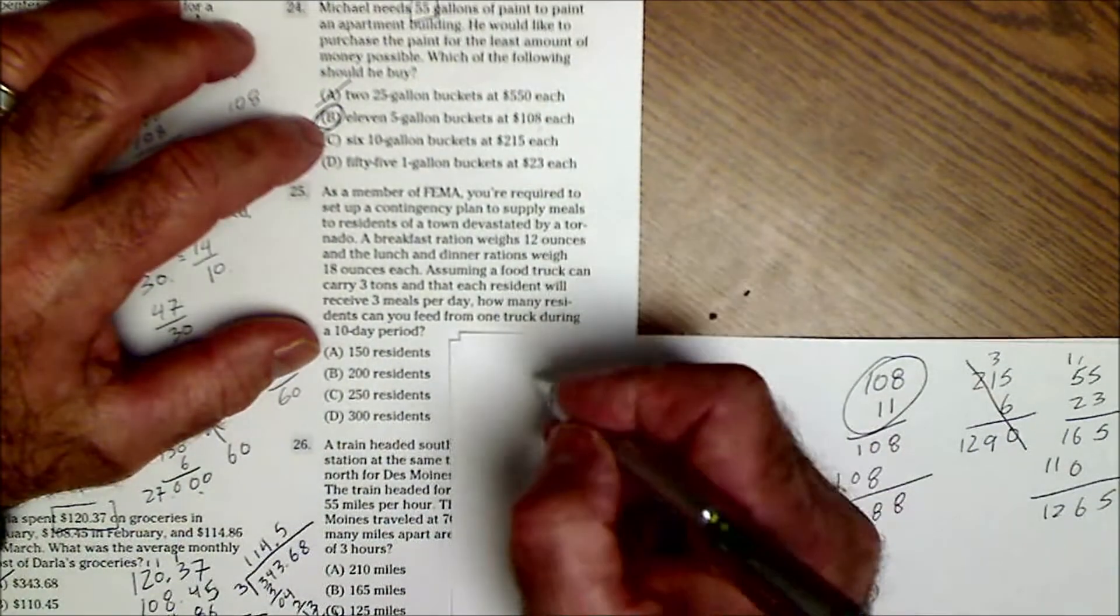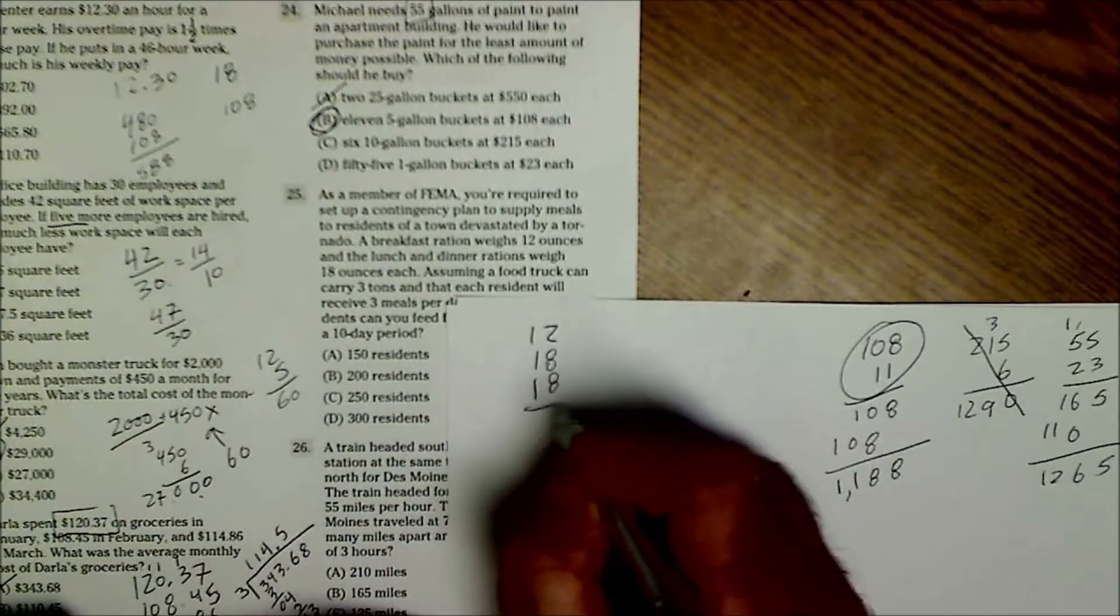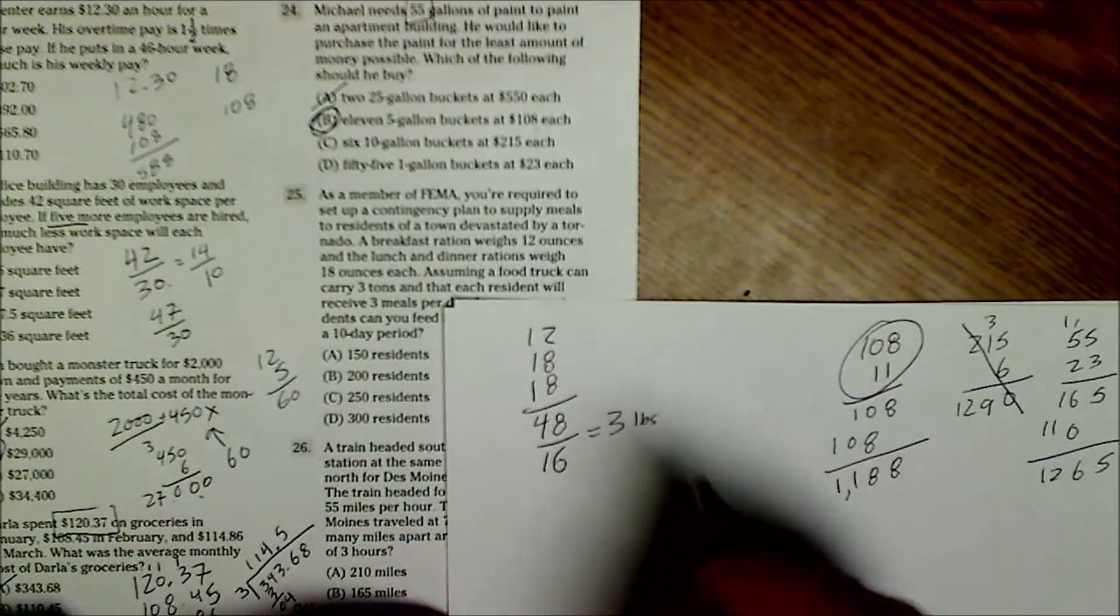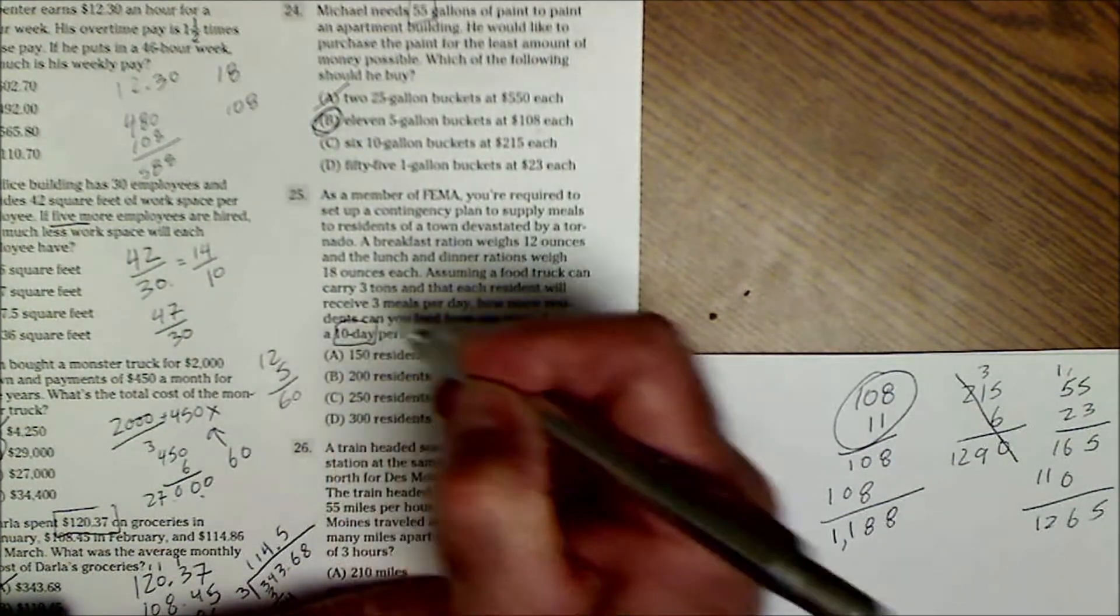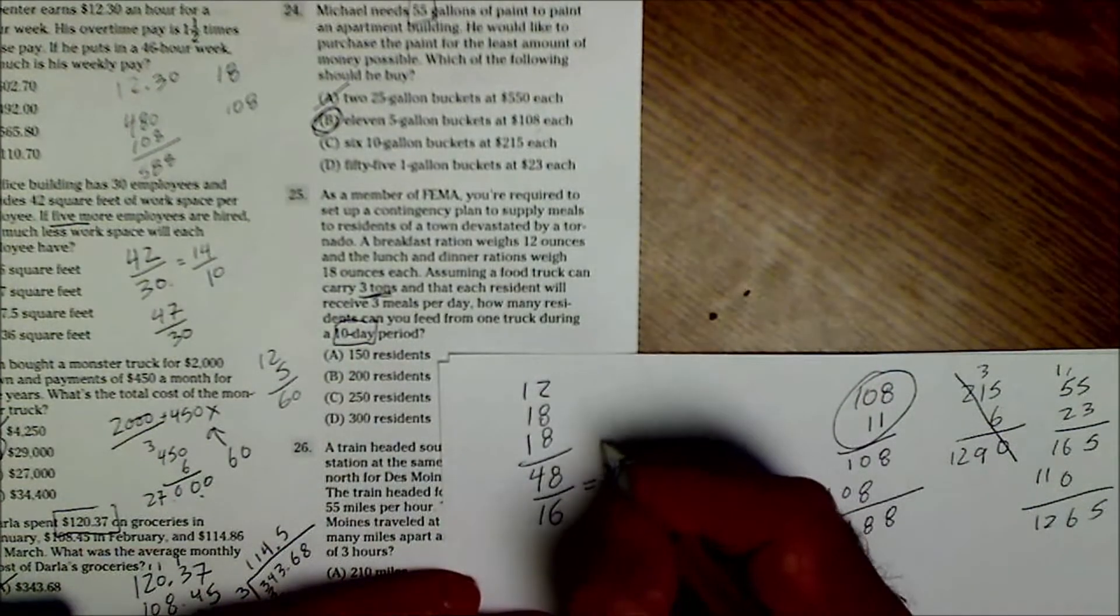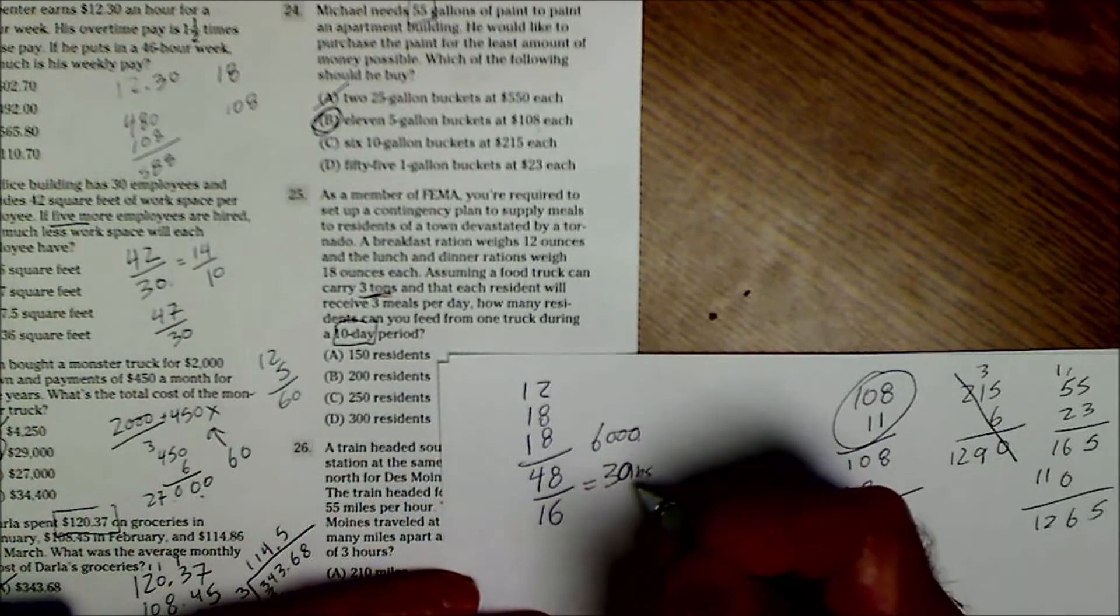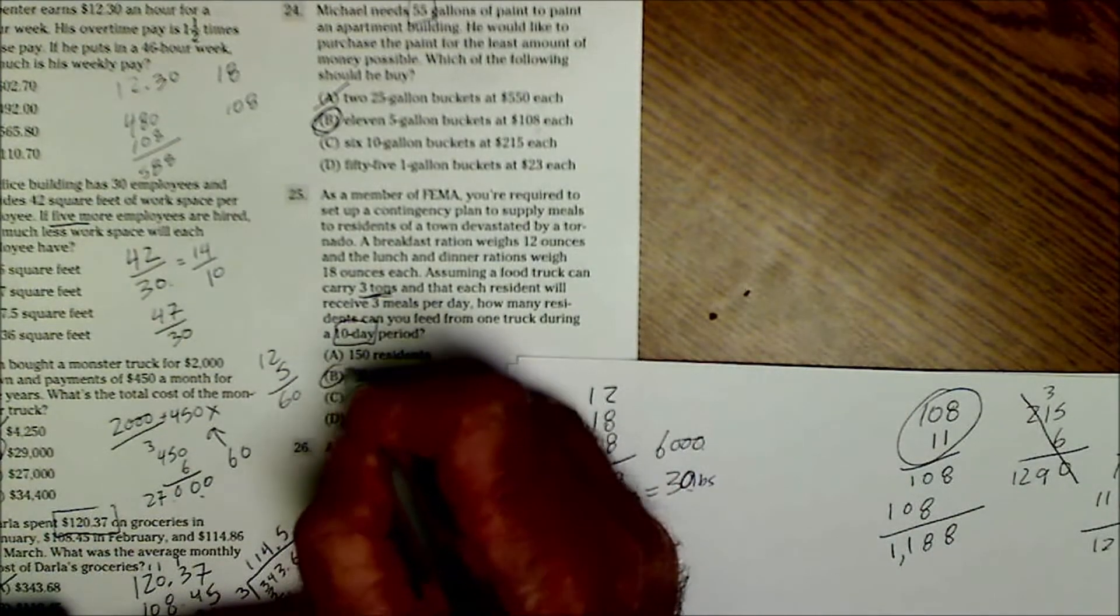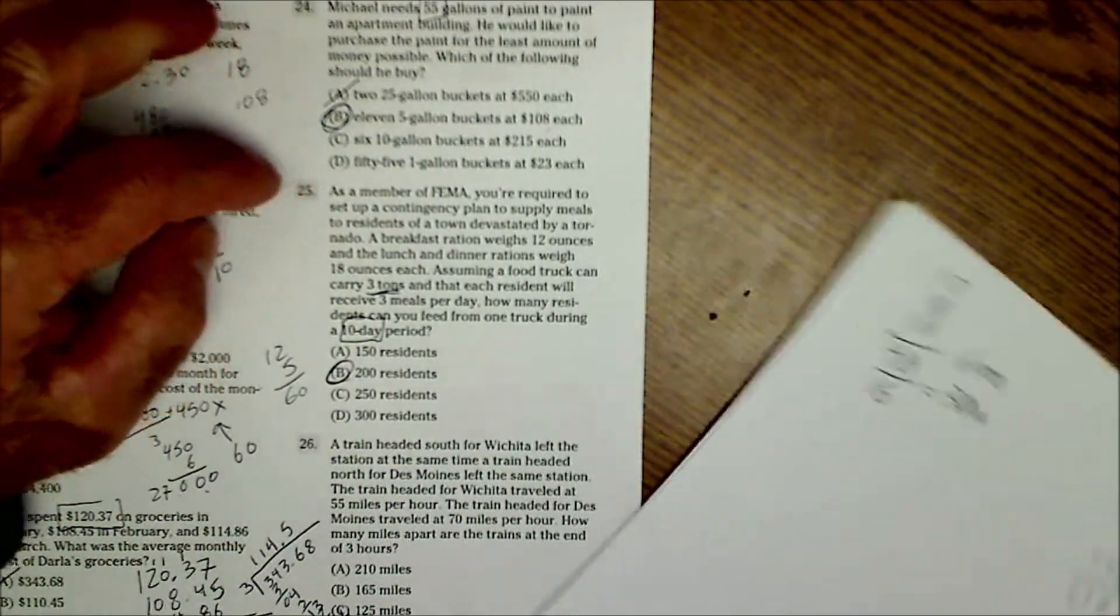You read through this problem. You have 12, 18 and 18. That's going to give you 48 ounces. 16 ounces to the pound to give you three pounds. So per day one troop eats three pounds. How much for a 10-day period? So one troop's going to eat 30 pounds per day. A truck can carry three tons or 6,000 pounds. A troop is going to need 30. 6,000 divided by 30 is 200. So it's 200 troops.